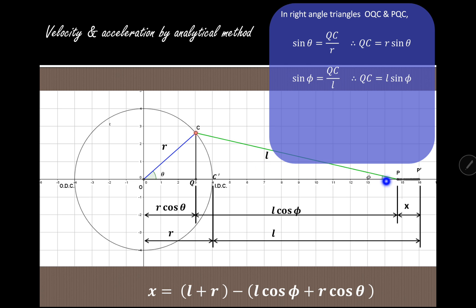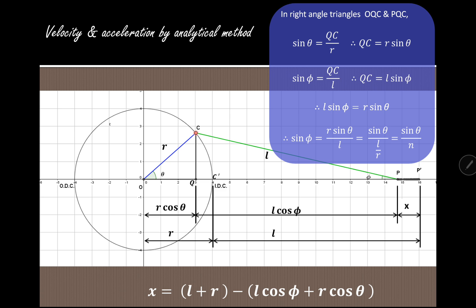Similarly, in right angle triangle PQC, sin phi is equal to the opposite side QC divided by the hypotenuse PC, which is L. Since both equations represent QC, we equate them: L sin phi equals R sin theta. Therefore sin phi equals R sin theta upon L, which can be written as sin theta divided by N, where N equals L upon R is the obliquity ratio. This was derived earlier when we found displacement, velocity, and acceleration of the piston.